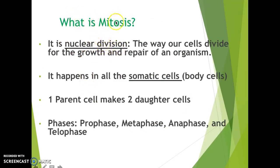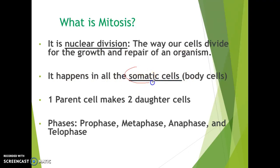So what is mitosis? Mitosis is basically nuclear division — it is the division of the nucleus inside the cell whenever the cell is going through division. This is how our cells divide for the growth and repair of an organism. It happens in all somatic cells, meaning body cells — not sperm cells or egg cells. So skin cells, blood cells, stomach cells, epithelial tissues — all of these go through mitosis.